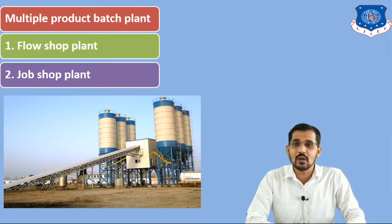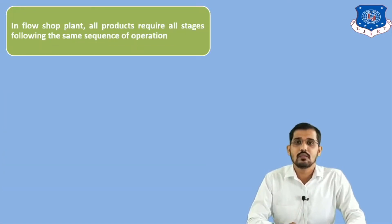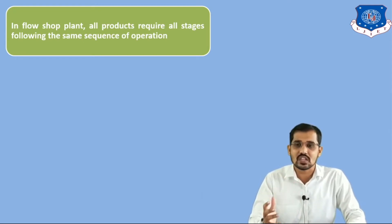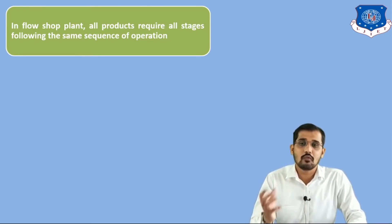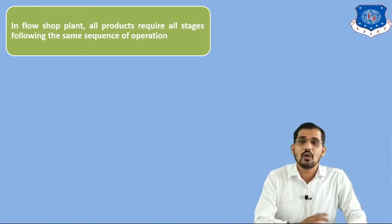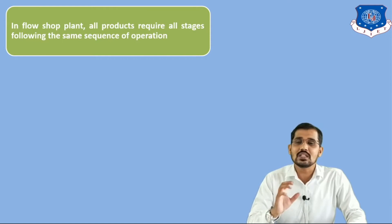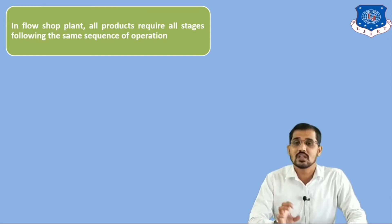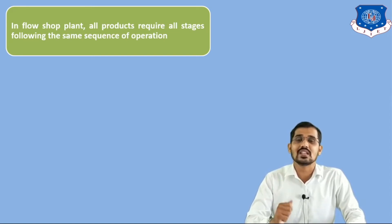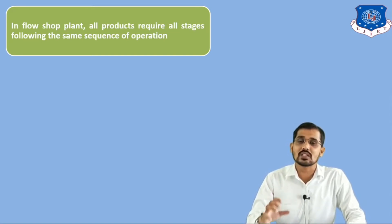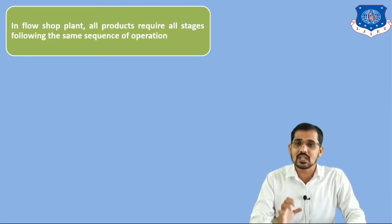Now we will see important points related to the multiple product batch plant. The first point is: in a flow shop plant, all products require all stages following the same sequence of operation. Suppose there are multiple products — for example, product A, product B, and product C. All these products are similar in nature, meaning they all require the same number of stages. Stages means multiple operations, for example: mixing, drying, and centrifuge. So all these products require the same number of stages and the same sequence.